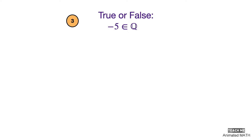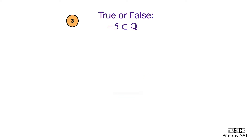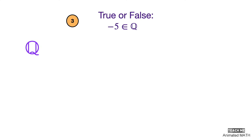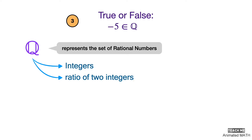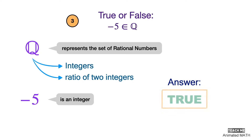Negative 5 is an element of Q. Q represents the set of rational numbers. These include the set of integers plus numbers that can be expressed as a ratio of two integers. Negative 5 is in this set, so the answer is true.